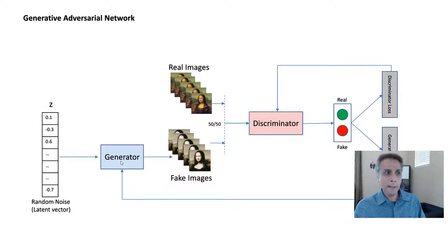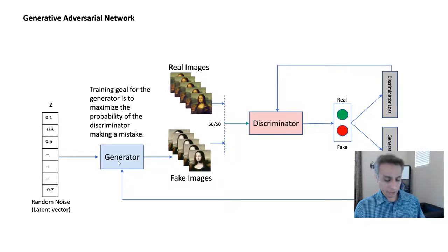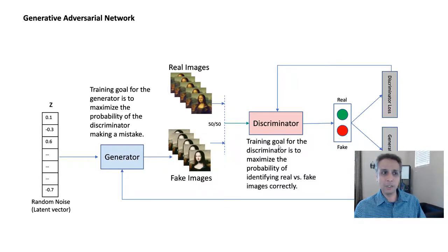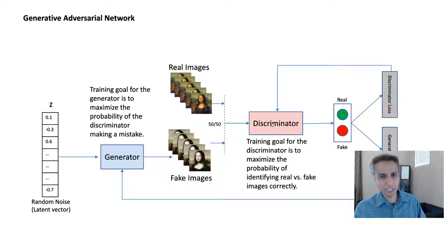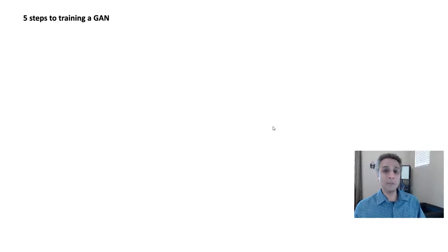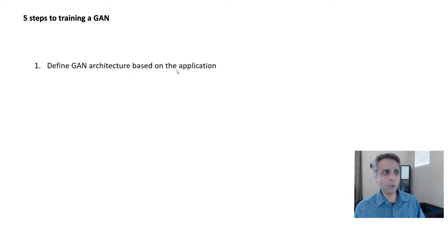The goal of the generator is to maximize the probability of the discriminator making a mistake, and the discriminator's goal is to maximize the probability of correctly identifying real versus fake. When training, the discriminator is kept fixed while you train the generator, and then the generator is fixed while you train the discriminator. Now let's look at the five steps of training a GAN.